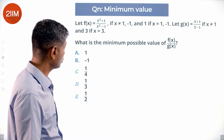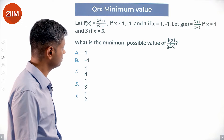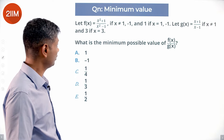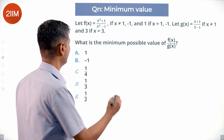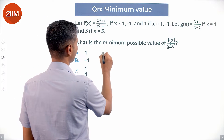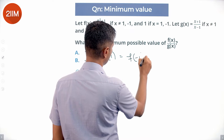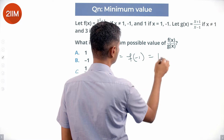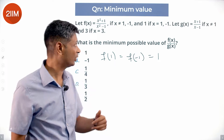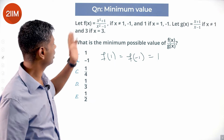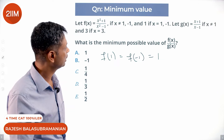f(x) = (x² + 1)/(x² - 1) for x not equal to 1 and -1, and f(1) = f(-1) = 1. We define it this way because at x = 1 or x = -1, the denominator goes to 0, and we don't want that.